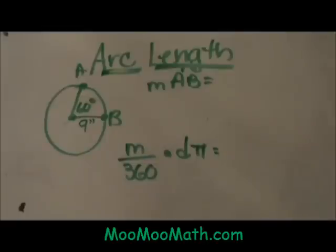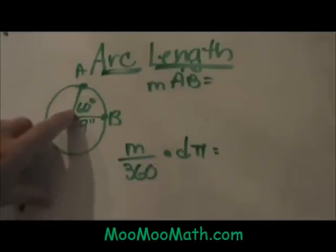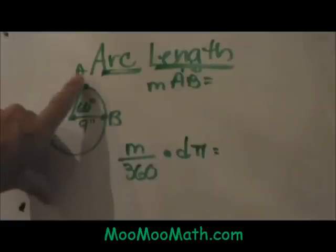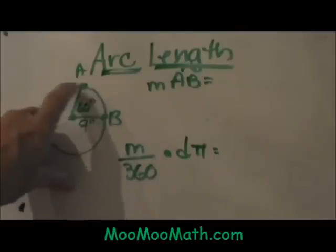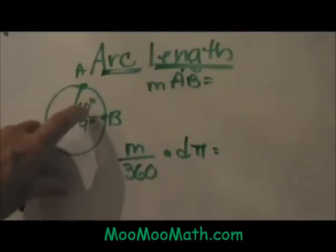Arc length gets confused with arc measure. Let me first define what the arc length is. This central angle is 60 degrees so this arc measure is 60 degrees. We have 360 degrees in a circle so the arc is the same as the central angle as far as the measure.